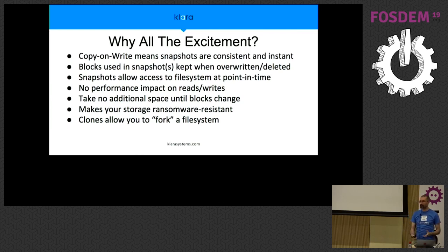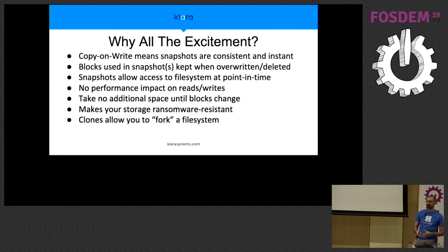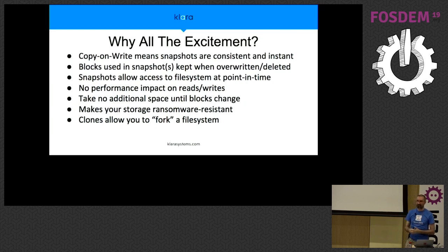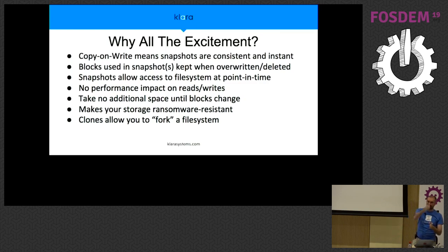Snapshots are read-only, but there's another concept called a clone of a file system, where you can make a writable version that still shares space like a snapshot does, which effectively allows you to fork a file system. You can take an image of a database before you upgrade it, fork it, and have the other version — very useful for development, where you could snapshot a version of the database, test it in development, and throw it away, all while not overwriting the production copy but sharing blocks so you don't need twice as much space.